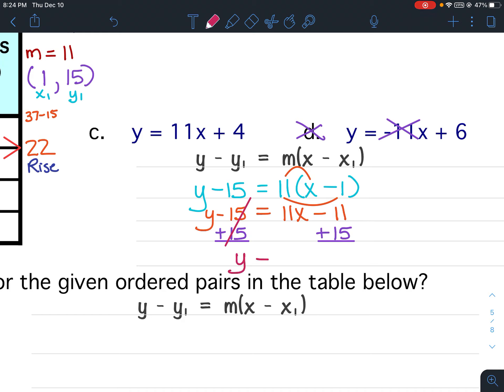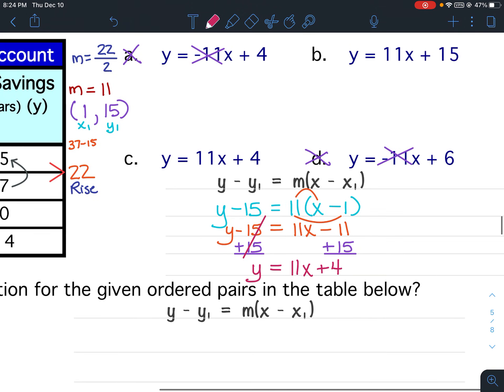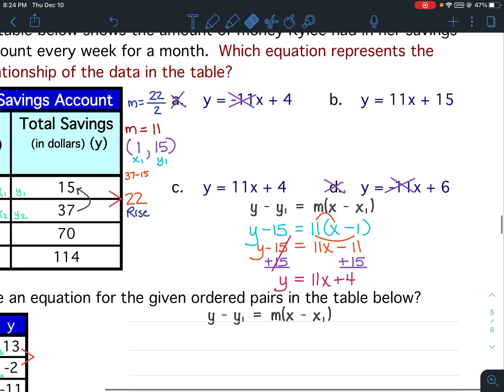So my equation, y equals 11x and then negative 11 plus 15. You would be using your calculator if you need to. Negative 11 plus 15 or 15 minus 11 is positive 4. So my equation is y equals 11x plus 4. So my answer is c.